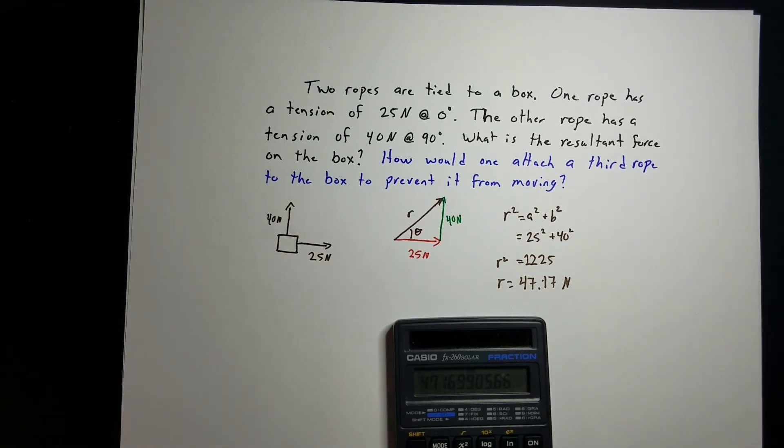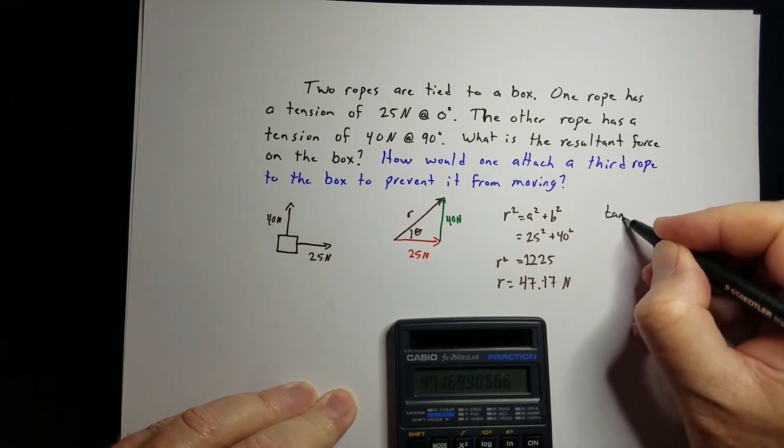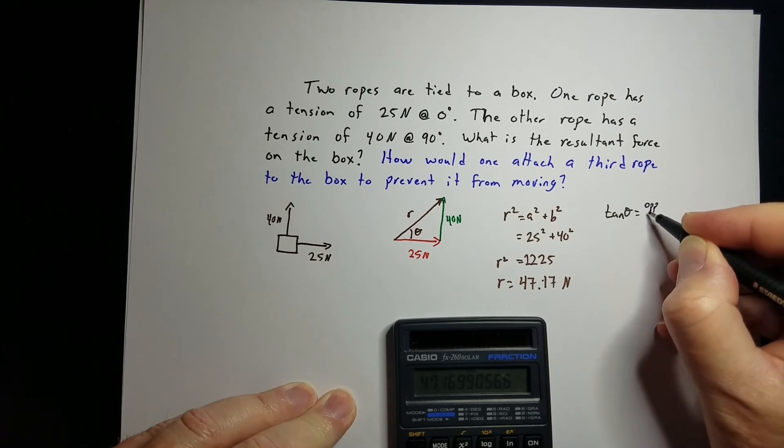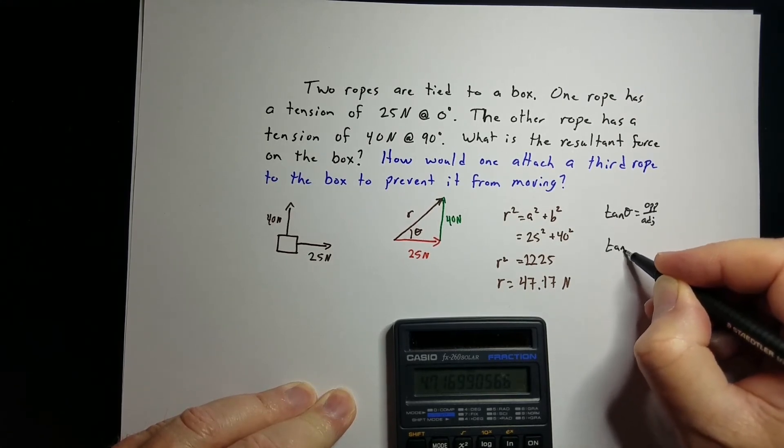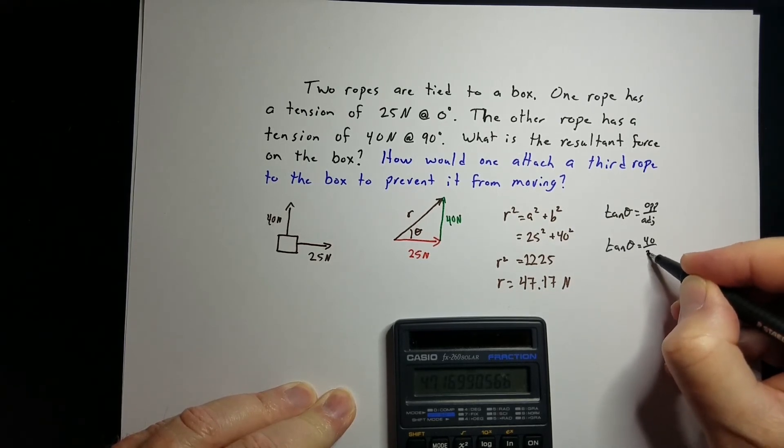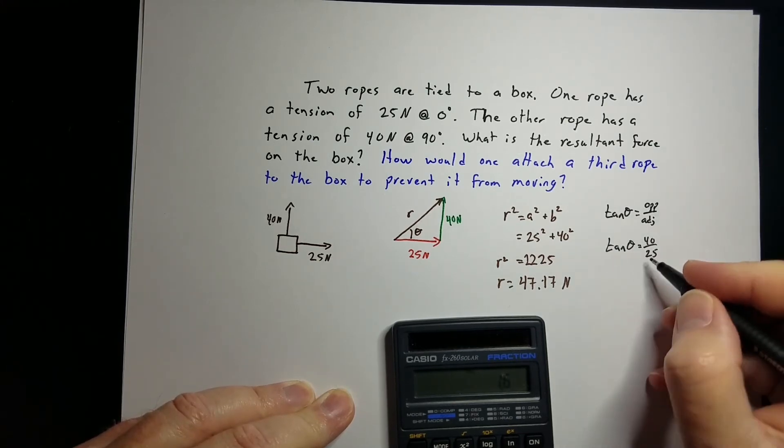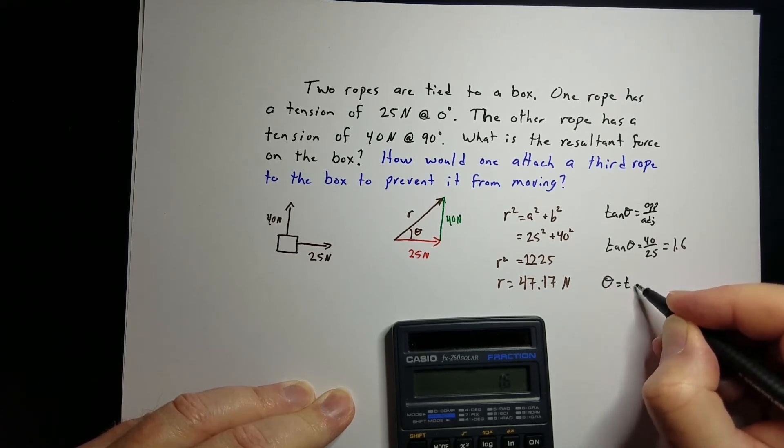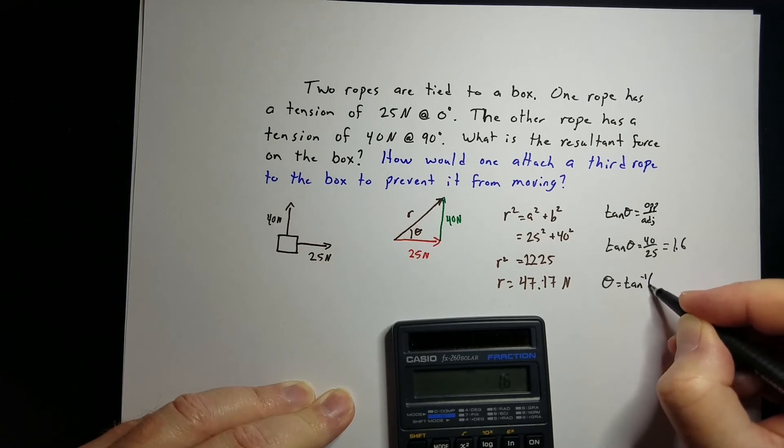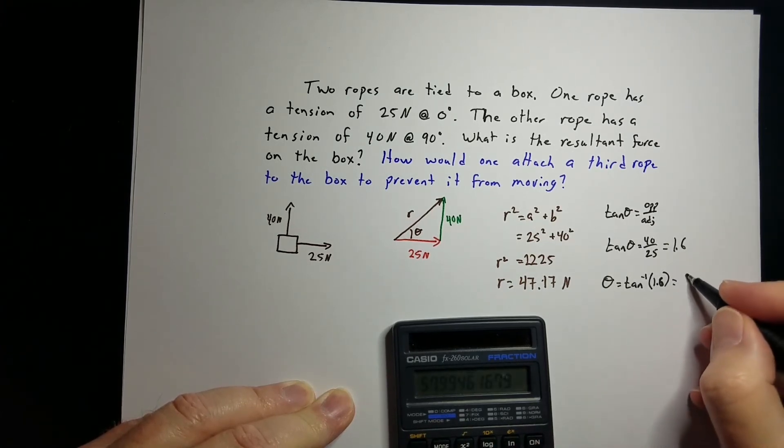To get the angle, we need to use tangent. Tangent of theta is opposite over adjacent, so tangent of theta would be 40 over 25. That is 1.6. We want the angle though, so we take the inverse tangent or arc tangent of 1.6, and that gives us 57.